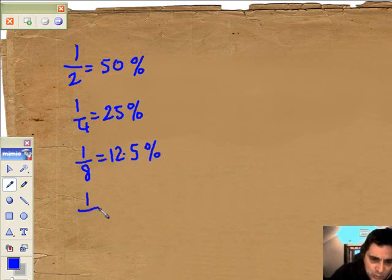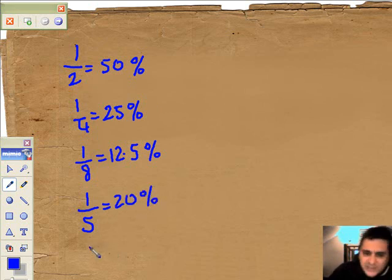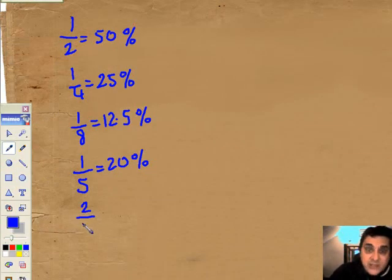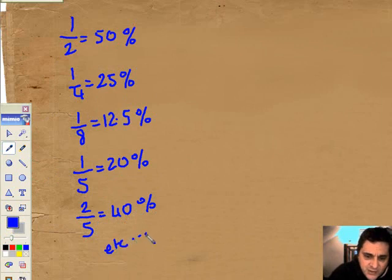Alright, we'll try this one. We'll try a fifth. Well, one-fifth of 100 is 20. So that's 20%. Then we can start playing with things like two-fifths. So one-fifth is 20, two-fifths is 40%, etc. Got the idea?